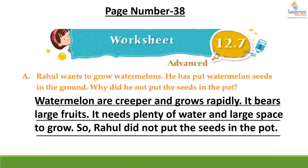Children, now come to page number 38, worksheet 12.7 A. Rahul wants to grow watermelons and has put watermelon seeds in the ground. Why did he not put the seeds in a pot? Answer: watermelons are creepers and grow rapidly; they bear large fruits and need plenty of water and large space to grow. So Rahul did not put the seeds in the pot.